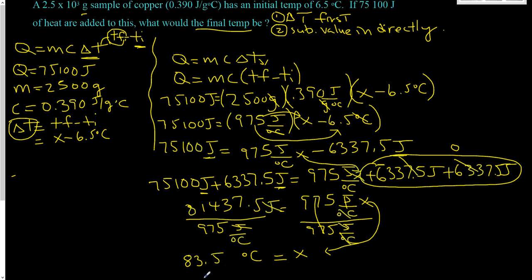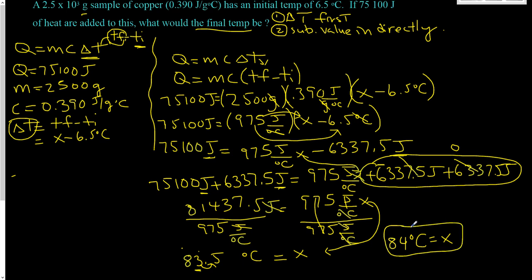Looking at significant digits, our answer should have two significant figures. We have 83.5 — rounding at the 5, since the preceding digit 3 is odd, we round up to 4. So using the proper number of significant digits, our final temperature is 84 degrees Celsius. Hopefully that was clear — if you have any questions feel free to ask, and thank you, have a great day.